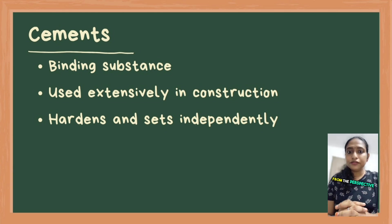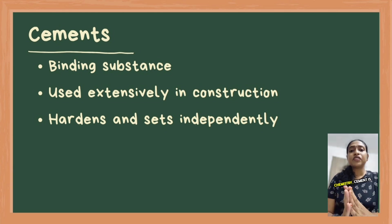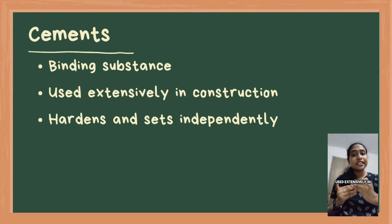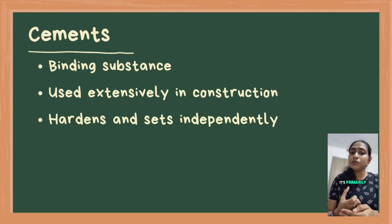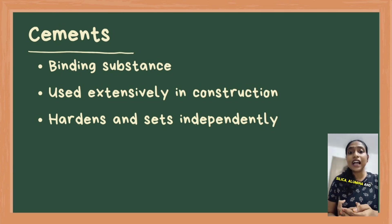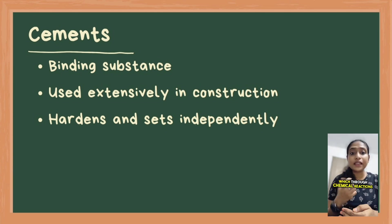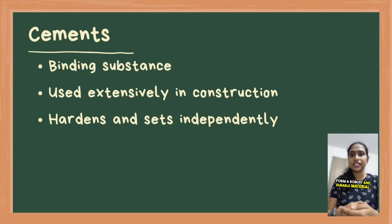From the perspective of materials chemistry, cement is a binding substance used extensively in construction that hardens and sets independently, binding other materials together. It is primarily composed of calcium, silica, alumina, and iron, which through chemical reactions form a robust and durable material.